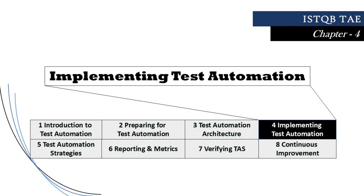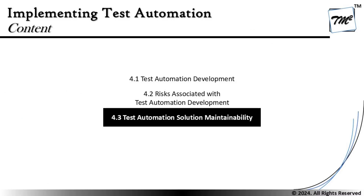Hello friends and greetings for the day. Welcome back to the tutorial on ISTQB test automation engineer certification. We are in chapter 4 talking about implementing test automation, and as part of today's tutorial we are stepping into section 4.3 — the test automation solution maintainability — and we'll be trying to understand what are the important steps to take into account when talking about the maintenance of a test automation solution.